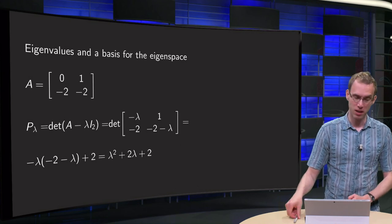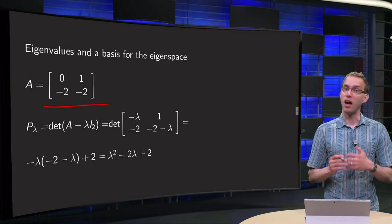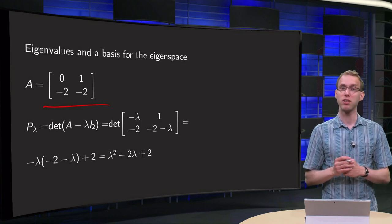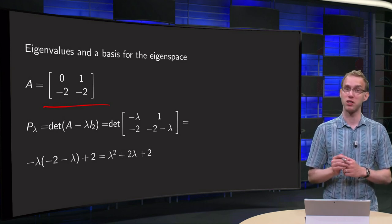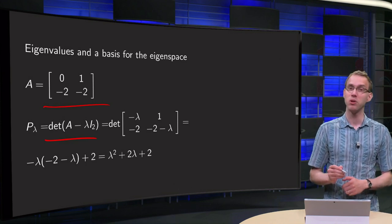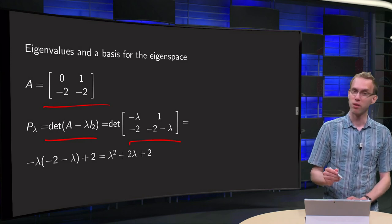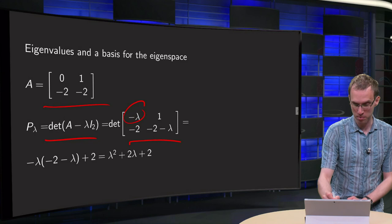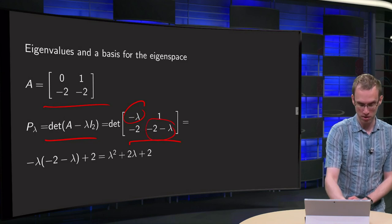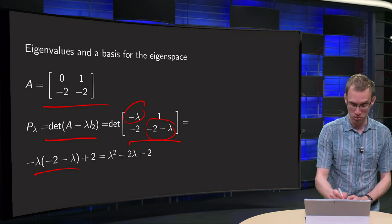So let's have the following matrix: A equals 0, 1, minus 2, minus 2. We want to find the eigenvalues and eigenvectors, so first we want to find the characteristic polynomial, the determinant of A minus lambda times I2. So subtract a lambda from the diagonal and we have the determinant minus lambda times minus 2 minus lambda minus 1 times minus 2, so plus 2.